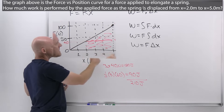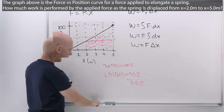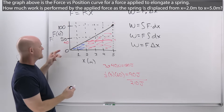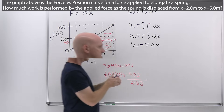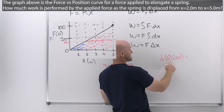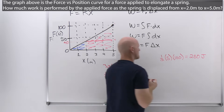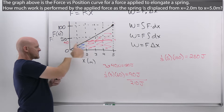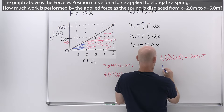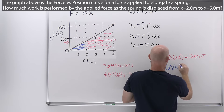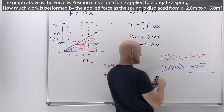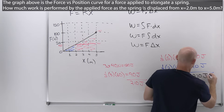That's not the only way — we could also take the big triangle minus the little one. The big triangle: one half times 5 times 100 equals 250 joules. Then we subtract the little triangle at 2 meters, which has a base of 2 and a height of 40 newtons. That's one half times 2 times 40 — half of 2 is 1, so times 40 is just 40 joules. Taking the difference: 250 minus 40 gives us 210 joules once again.